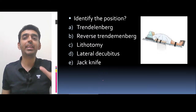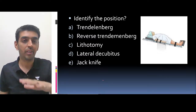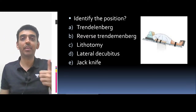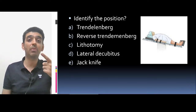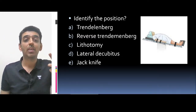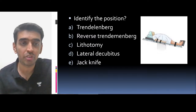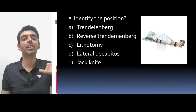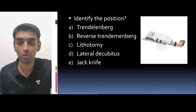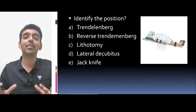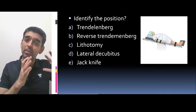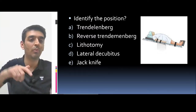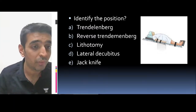First question on your screen: identify the position. The options are — option A: Trendelenburg position; option B: Reverse Trendelenburg position; option C: lithotomy position; option D: lateral decubitus; or option E: jackknife position. This is a previous year asked question — not exactly the same image, but a similar one was asked.